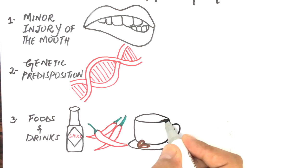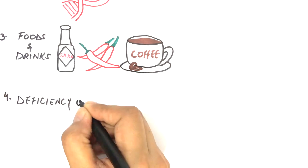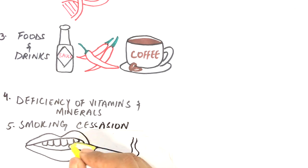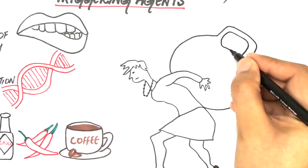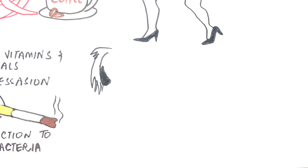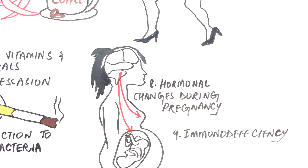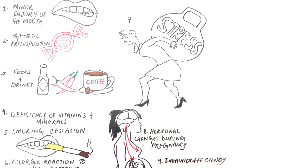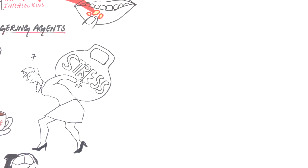Additional triggering factors include a deficiency of certain vitamins and minerals including zinc, vitamin B12, folate and iron that may present with anemia; smoking cessation; allergic reaction to oral bacteria; emotional stress; and hormonal changes associated with pregnancy, or having a weakened immune system due to certain chronic conditions. These triggering factors might be different in different groups of people, and individuals might have a single or more than a single triggering cause for the lesions.